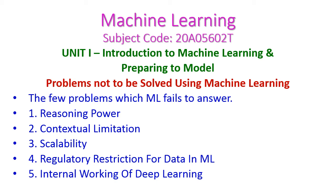In today's machine learning class we will see the problems which are not to be solved by using machine learning algorithms. This comes under the first unit, introduction to machine learning. The problems that cannot be solved by machine learning algorithms are: reasoning power, contextual limitations, scalability, regulatory restrictions for data, and internal working of deep learning. Let us see all those things one by one.